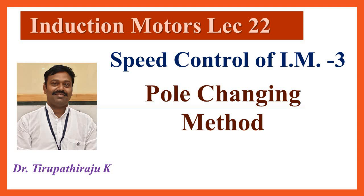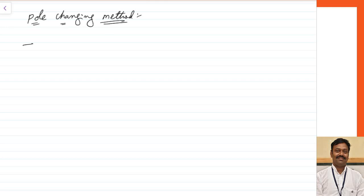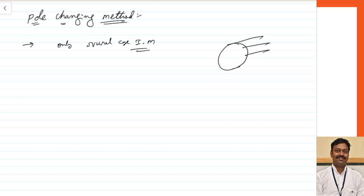Good morning all. Today we are going to discuss about the pole changing method of speed control. This method can be used only for squirrel cage induction motors. In the basics, the rotor bars of a squirrel cage induction motor are short circuited, so they can easily adapt to the number of poles on the stator.